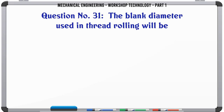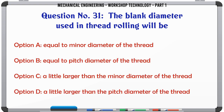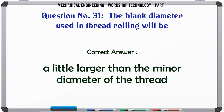The blank diameter used in thread rolling will be: A. Equal to minor diameter of the thread. B. Equal to pitch diameter of the thread. C. A little larger than the minor diameter of the thread. D. A little larger than the pitch diameter of the thread. The correct answer is: A little larger than the minor diameter of the thread.